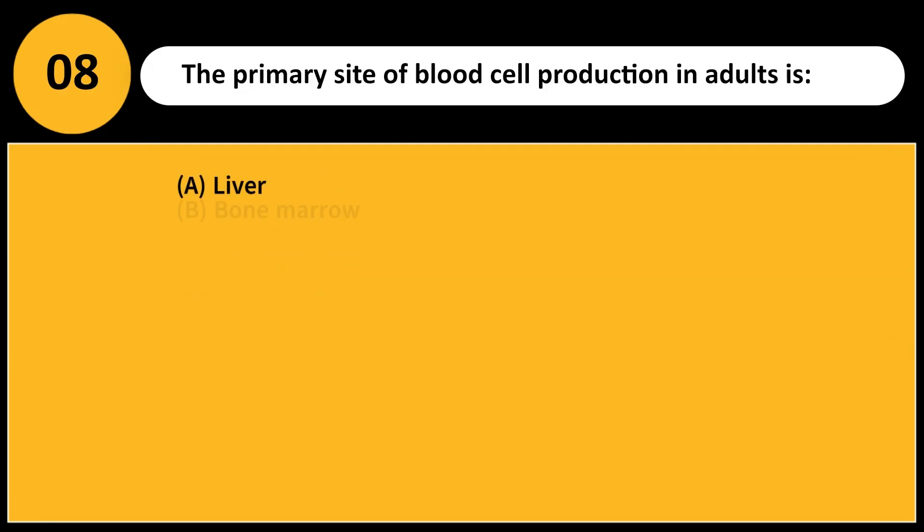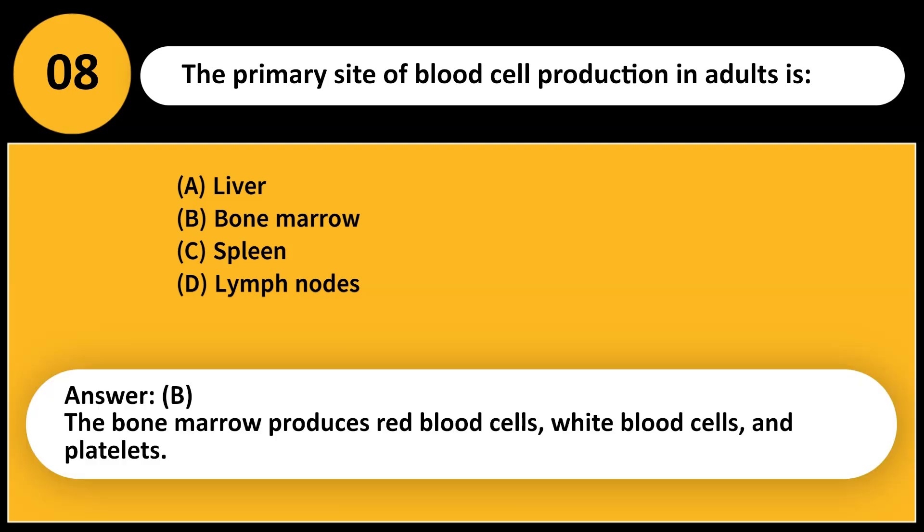The primary site of blood cell production in adults is: A. Liver. B. Bone marrow. C. Spleen. D. Lymph nodes. Answer: B. The bone marrow produces red blood cells, white blood cells, and platelets.